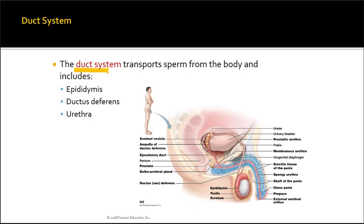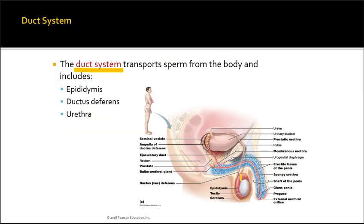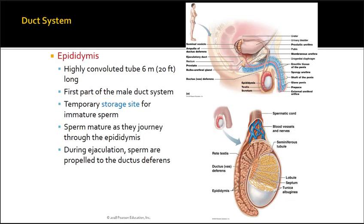The duct system transports sperm and its fluid out of the body. Sperm moves from the seminiferous tubules into the rete testis, then into the epididymis, then into the ductus deferens. Different fluid secretions are added along the way to make it more liquid, and then it makes its pathway through the urethra. The urethra has two purposes: passage of sperm and passage of urine, at different times — one system shuts off while the other's working.